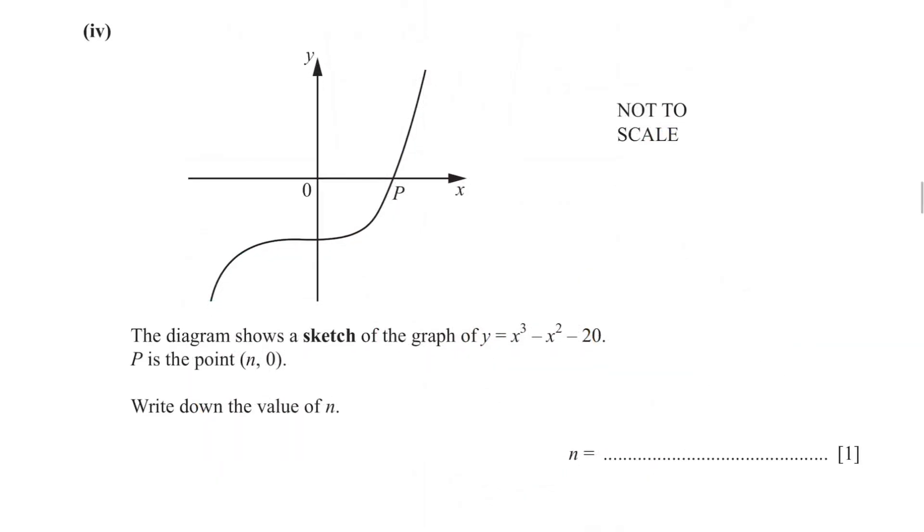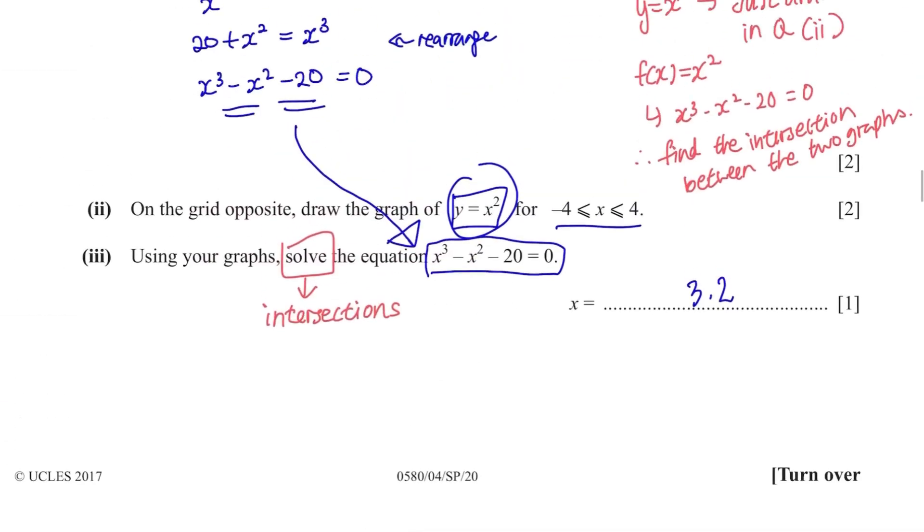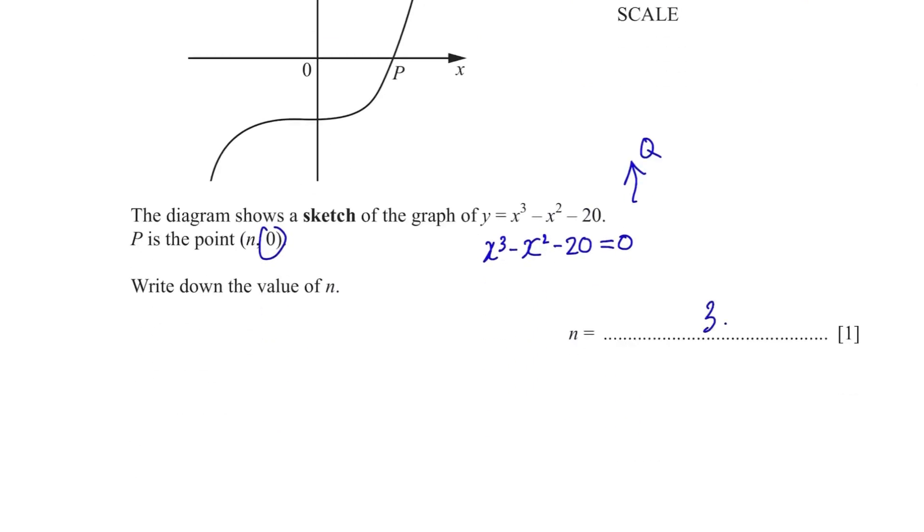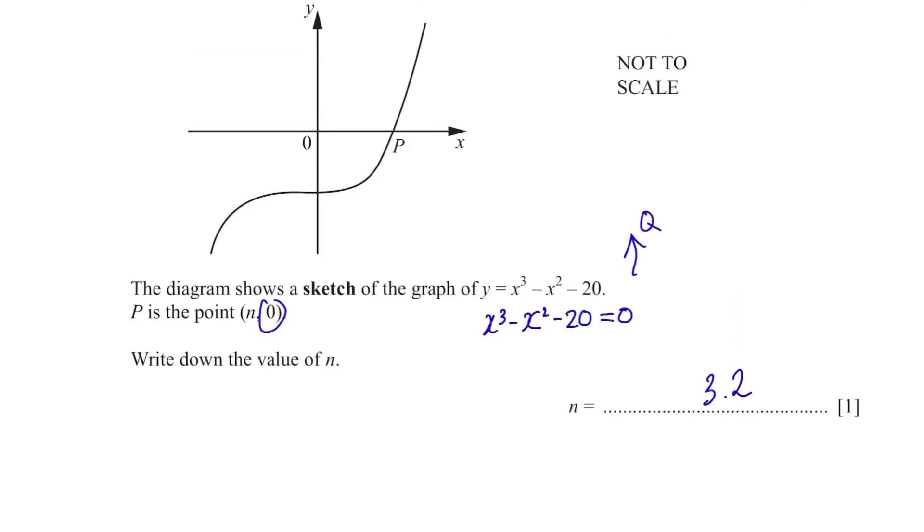Last part. The diagram shows a sketch of the graph of y equals to x cube minus x square minus 20, passing through the point (n,0). Write down the value of n. The value of y is 0 as given here and that will produce the equation x³ - x² - 20 = 0, which is the same as above questions. So write the same answer from part 3. So the most important thing is to draw an accurate correct graph in order to score full marks on this question. Don't worry if you didn't get it the first time. I didn't too. Just practice this type of questions and you will do much better.